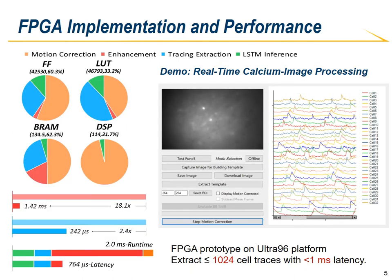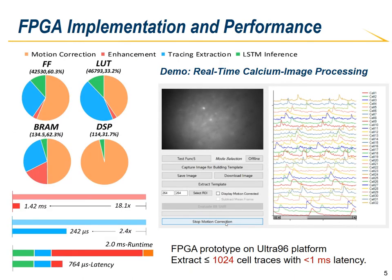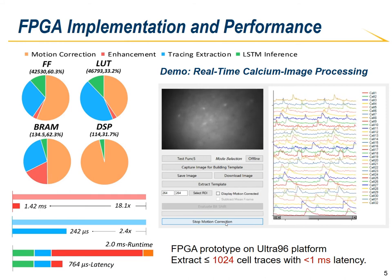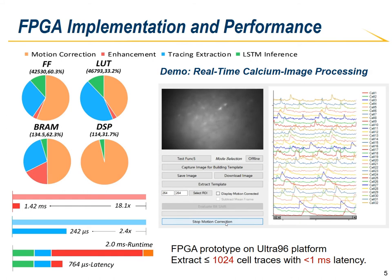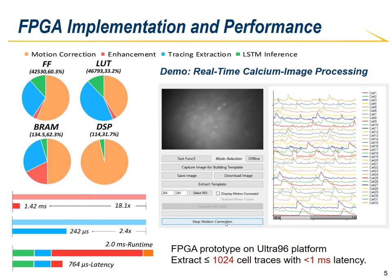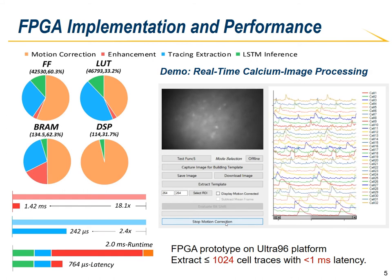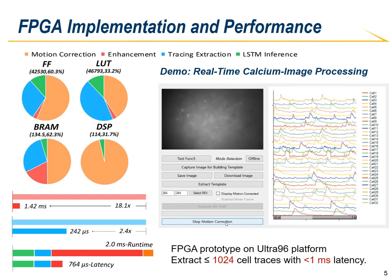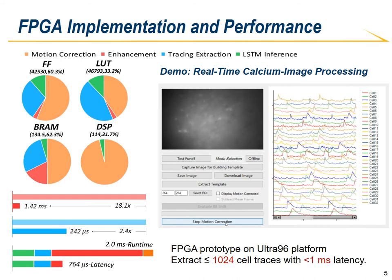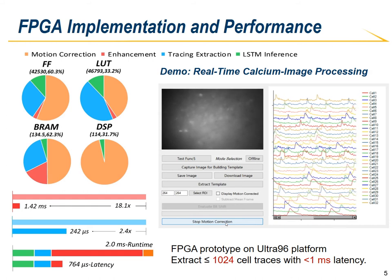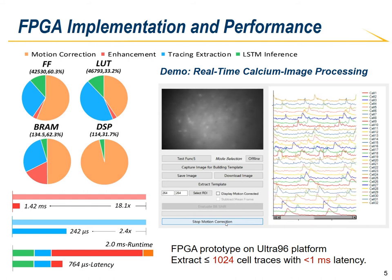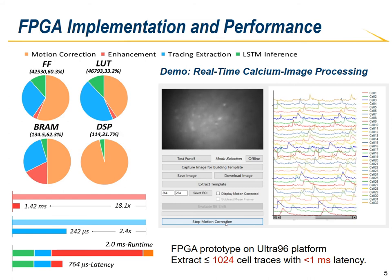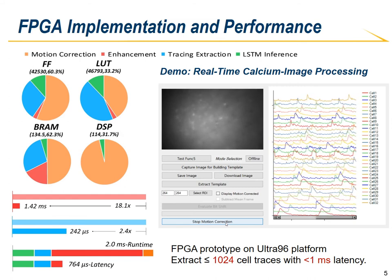This slide summarizes the FPGA hardware utilization and performance of the accelerators for each processing stage, and also shows a demo of the real-time calcium trace extraction from calcium images. The proposed design is implemented on the Ultra96 platform at 300 MHz. Under this frequency, the implementation can extract up to 1024 cells with sub-millisecond processing latency, as image readout and processing are overlapped.